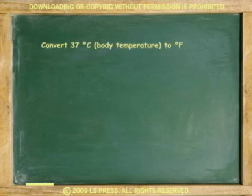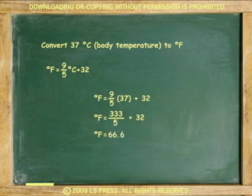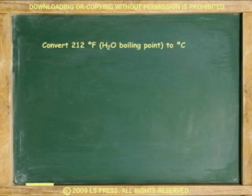Let's do a couple of examples. Convert normal body temperature 37 degrees Celsius to degrees Fahrenheit. F equals 9 over 5 times 37 plus 32. Multiply 9 times 37, divide by 5, add 32. The answer is 98.6 degrees Fahrenheit.